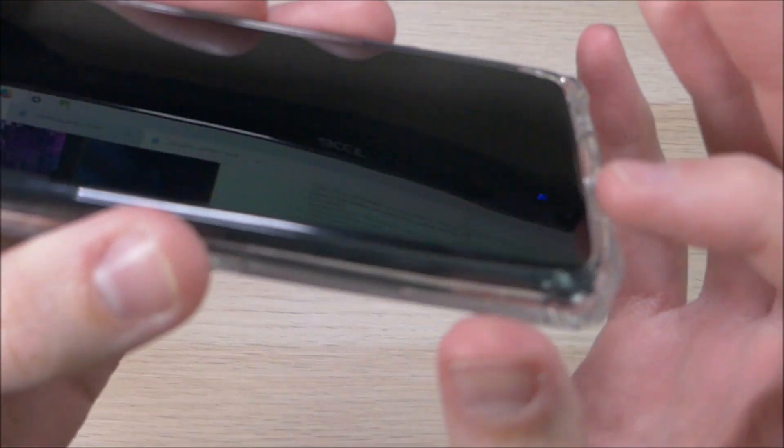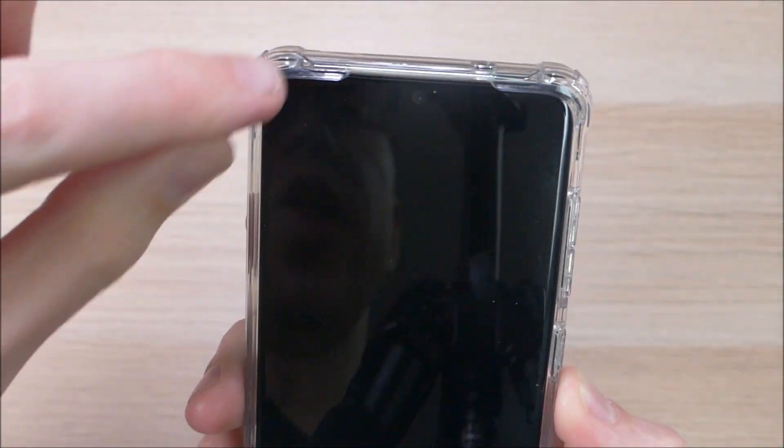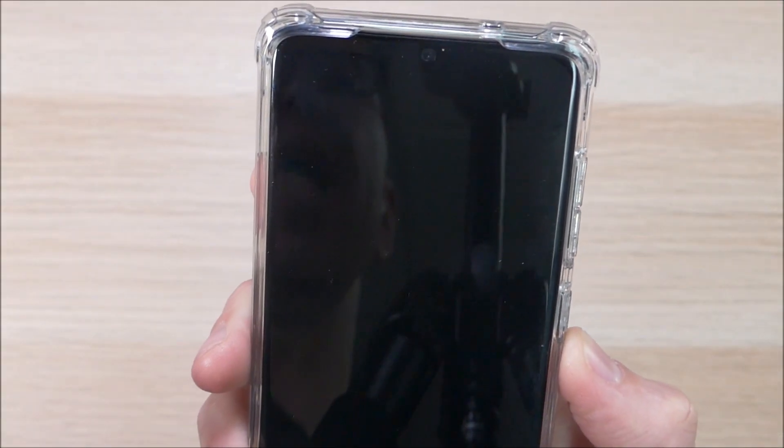Here on the front we do have a raised lip across the bottom and the top of the device that makes it so you can set the screen face down and not have to worry about the screen getting scratched up. And then here up top we do have this little notch there that makes it so you can use the front facing speaker without the case getting in the way of your sound.